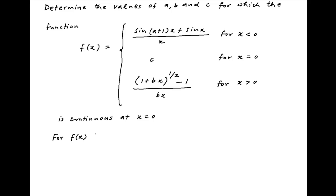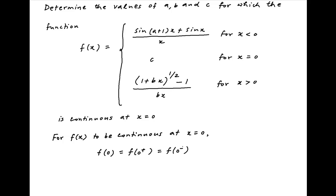For f(x) to be continuous at x = 0, the value of f(x) at x = 0, the limit of f(x) from the right-hand side at x = 0, and the limit of f(x) from the left-hand side at x = 0 should all be equal. Let's call this condition 1.